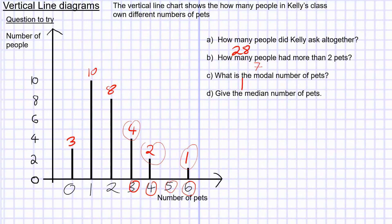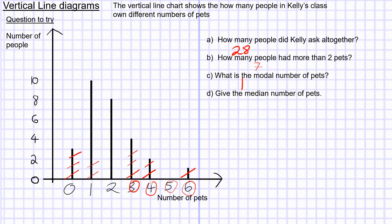To find the median number of pets, we're going to count in from the ends, crossing off values. Starting with six crossing off against zero, then four crossing off against zero — since there are no fives — continuing to cross off threes against ones and working inward. The only numbers I'm left with are twos, so the median number of pets is two.